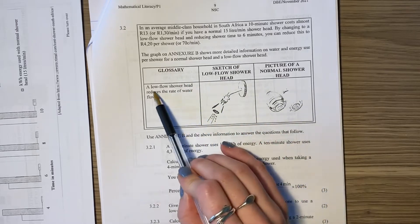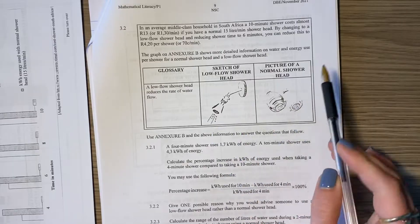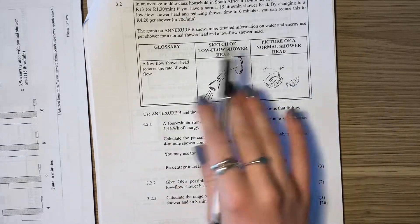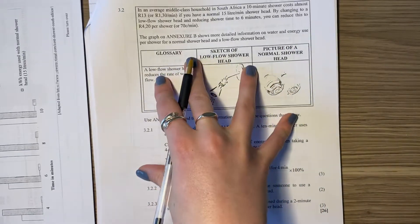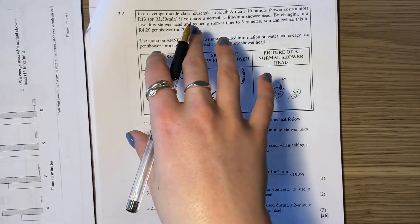Glossary: a low flow showerhead reduces the rate of water flow. Here's a little sketch, my sketch looks like onions. The most important thing is to read the information, but then go to the questions, because the questions help you interpret the information.